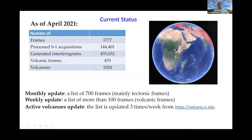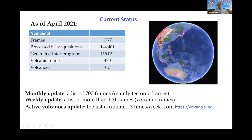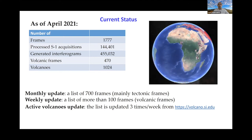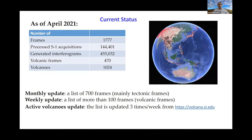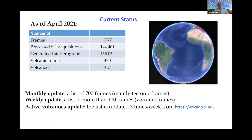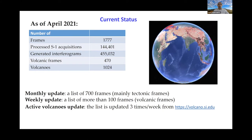Here I would like to explain the current status of the system. After Milan's presentation, you are now familiar with the frames, the interferograms, and the Sentinel-1 acquisition. As of April 2021, we have a total number of 1,777 frames which cover most of the global tectonic and volcanic zones. We have processed more than 144,000 Sentinel-1 acquisitions, as we call them Epochs, and based on that we generated about 455,000 interferograms globally.